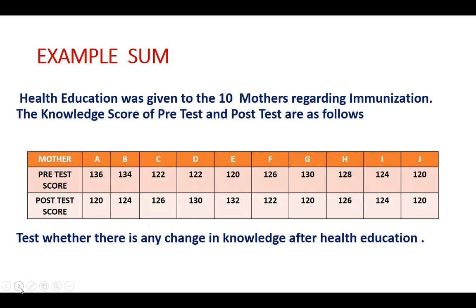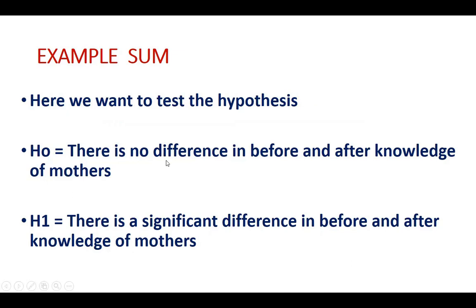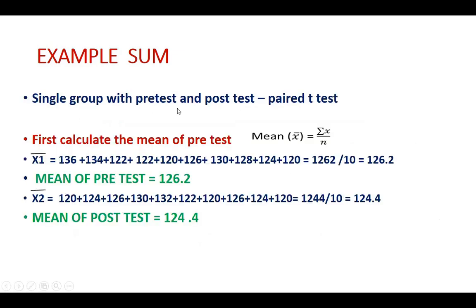The question is to test whether there is any change in knowledge after health education. Here the sample is one group — one group pre-test and post-test — so we apply paired t-test. Null hypothesis: there is no difference between pre and post-test knowledge of mothers. Alternate hypothesis: there is a significant difference in pre and post-test knowledge scores among mothers. First, calculate the mean of pre-test: x̄₁ = Σx₁/n = 1262/10 = 126.2. Mean of post-test: x̄₂ = Σx₂/n = 1244/10 = 124.4.